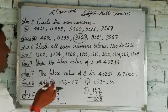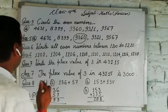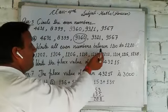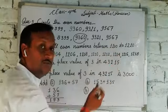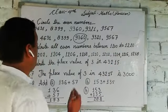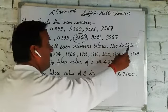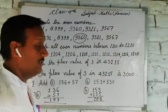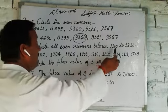This is the second question, Question 6: Write all even numbers between 1200 to 1220. So we need even numbers. How many numbers?